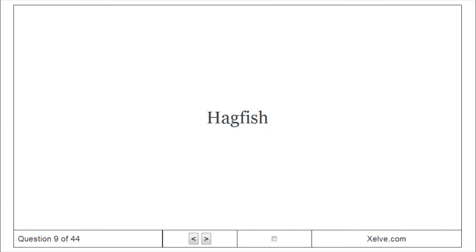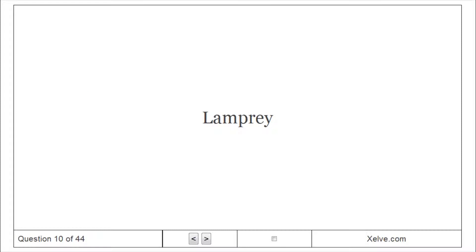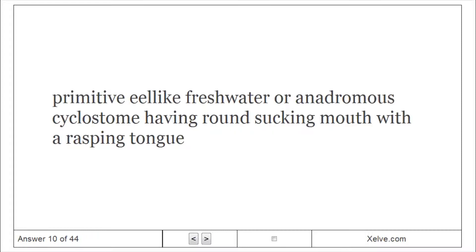Hagfish: An eel-like cyclostome having a tongue with horny teeth and a round mouth surrounded by eight tentacles. Lamprey: A primitive eel-like freshwater or anadromous cyclostome having a round sucking mouth with a rasping tongue.